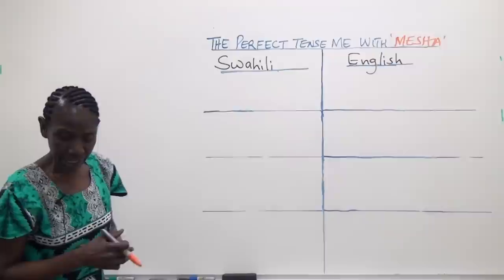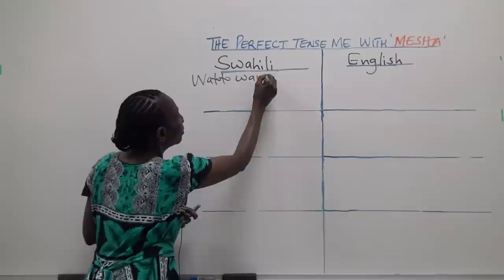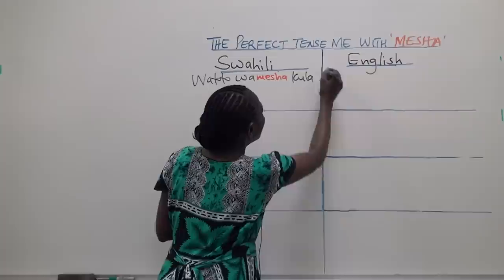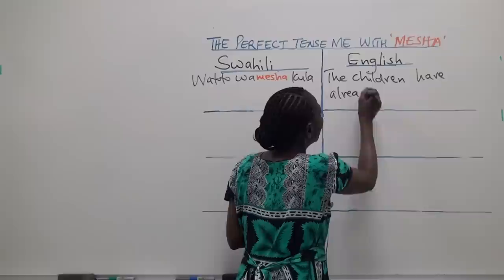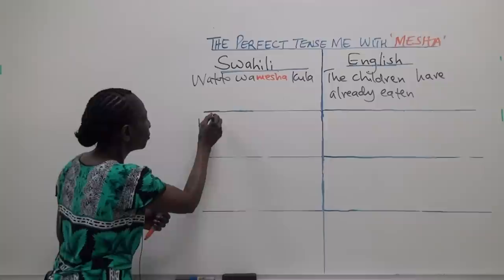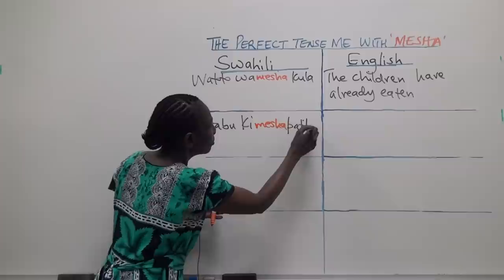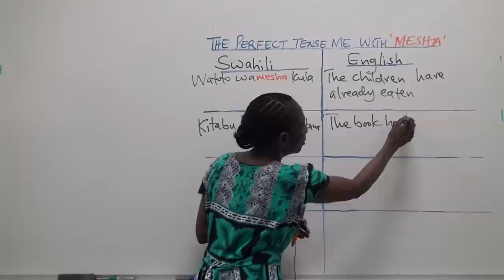For example: Watoto wamesha kula — 'The children have already eaten.' Another sentence: Kitabu kimesha patikana — 'The book has been found.'